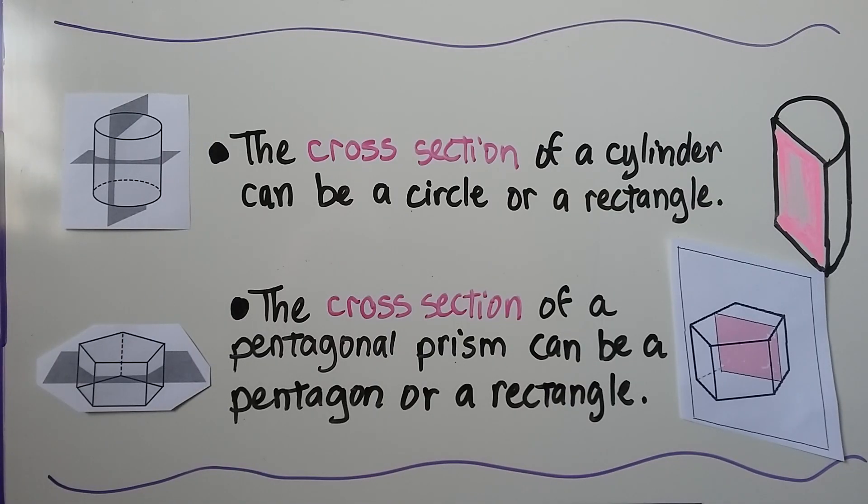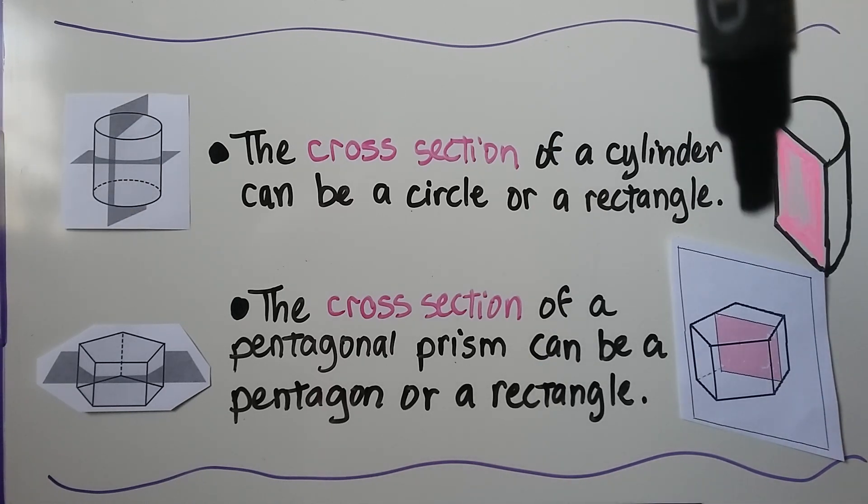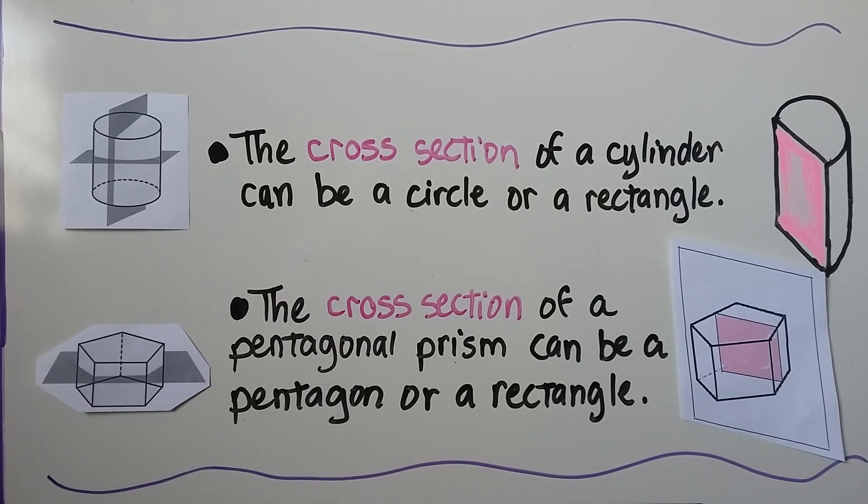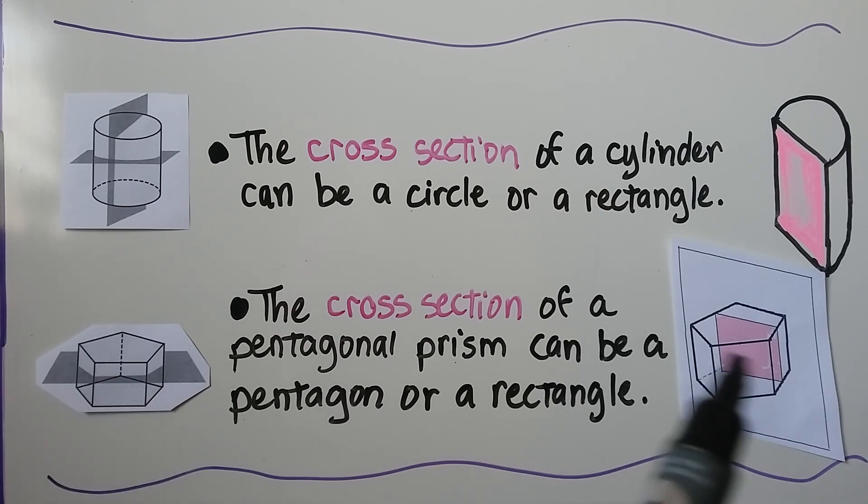The cross section of a cylinder can be a circle or a rectangle, depends on where the plane is slicing it. Circle, rectangle. So we can see the rectangle here. And the cross section of a pentagonal prism can be a pentagon if it's parallel to the base, or it could be a square or rectangle depending on the size and shape of the pentagonal prism.